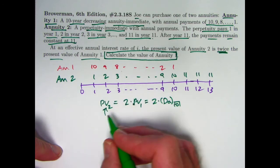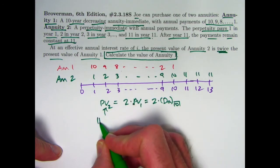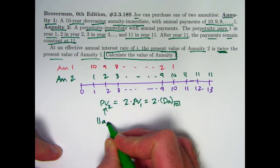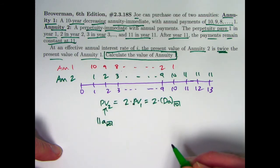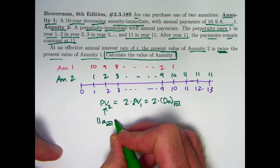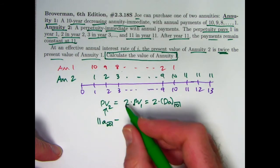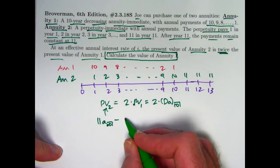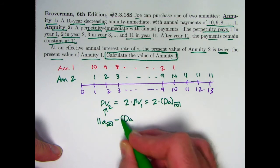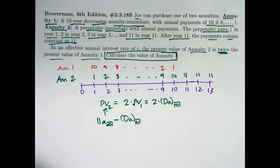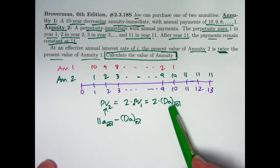We can think of the present value of annuity 2 in green here as 11 times the present value of a perpetuity immediate that would start payments of 11 at time 1 minus the decreasing annuity that we see in red up there minus DA 10. Okay, so this is the key equation that we need to help us solve for ultimately DA 10.